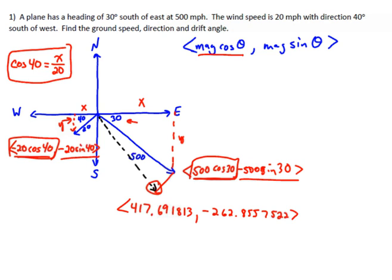Now we have the coordinates of the resulting vector, so we need to find ground speed. Ground speed is what the plane looks like it's heading. The way a plane works is the pilots point their plane this direction, and then the wind's going to blow them off course. The ground speed is what it looks like in comparison to the ground.